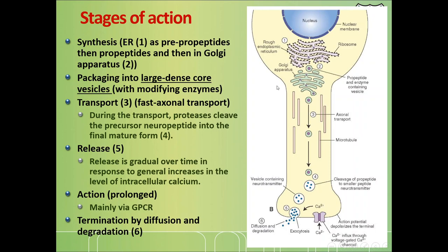From the Golgi, neuropeptides enter large dense core vesicles, characterized by a thick membrane and large size. The pro-peptide inside these vesicles travels along microtubules to the synaptic terminal, where modifying enzymes within the vesicles continue converting it into active form. Once at the synaptic terminal, it waits inside the vesicles for the influx of calcium, which triggers fusion of vesicles with the plasma membrane and release of their contents.